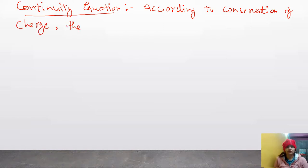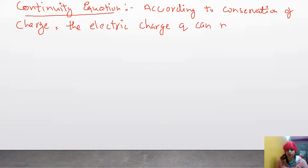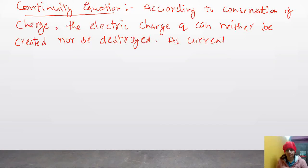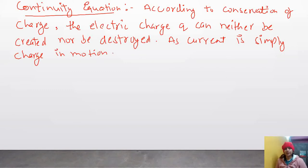According to conservation of charge, the electric charge Q can neither be created nor be destroyed. As current is simply charge in motion — current kya hai, charge motion mein hai — the continuity equation describes how much charge is flowing out of a given region, since current means charge in motion.